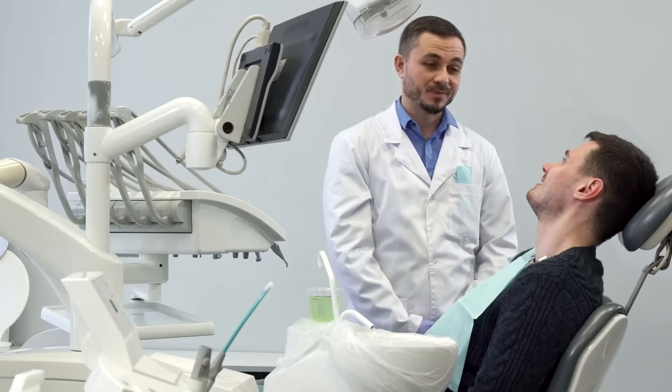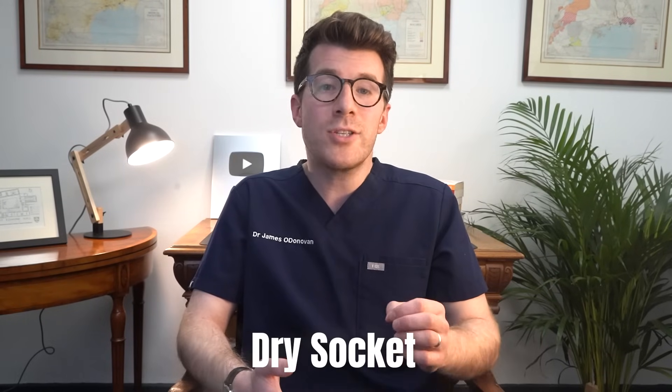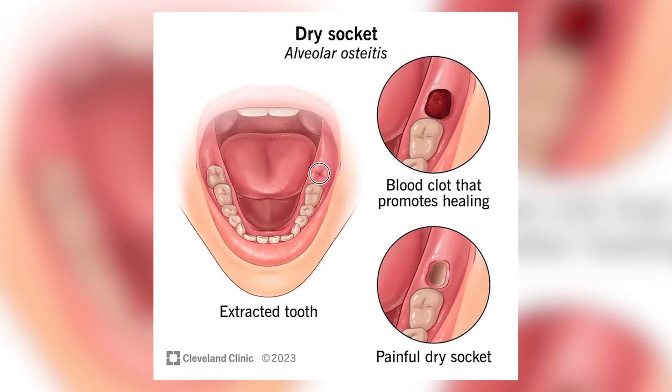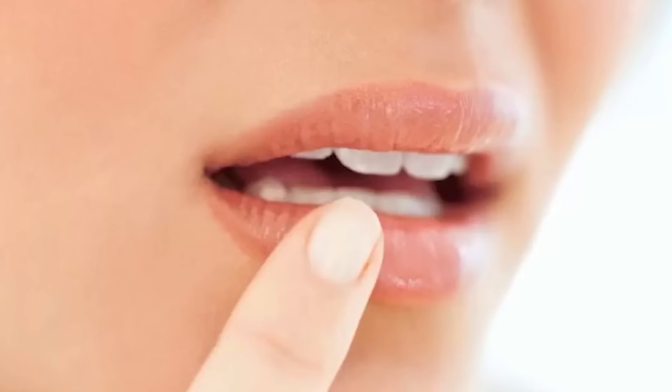Wisdom tooth removal is usually a simple and common procedure, but like any procedure, complications can happen and your dentist or surgeon should explain the risks beforehand. Complications can include a dry socket, which is a painful condition where the blood clot over the tooth socket doesn't form properly or is dislodged before your gum has healed. You might also get an infection which may need antibiotics, or damage to nerves close to the tooth causing numbness or tingling in your tongue, lips, and chin. This usually gets better, but it can last for a few weeks or months, and if it persists it's worth speaking to your dentist or surgeon.